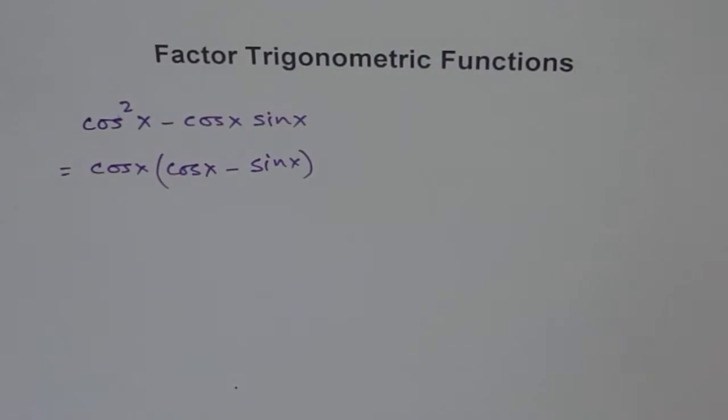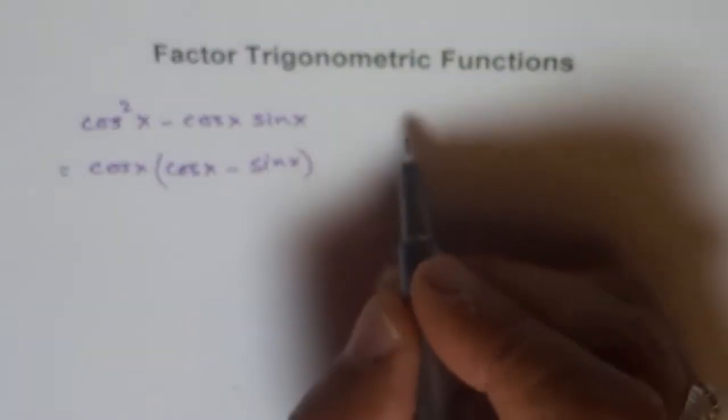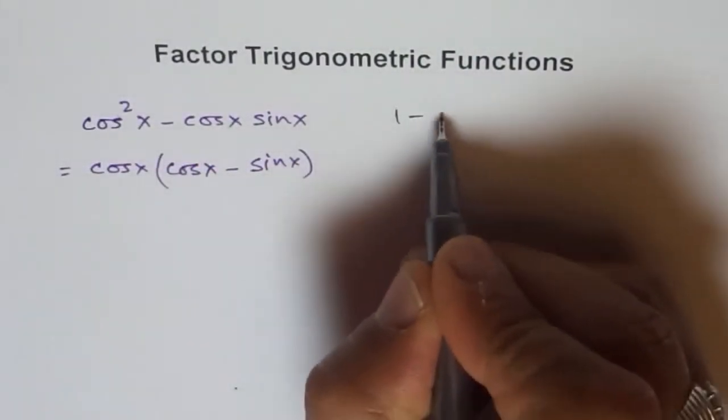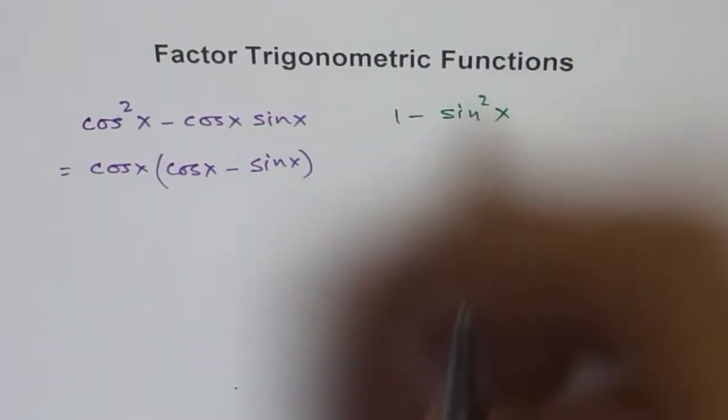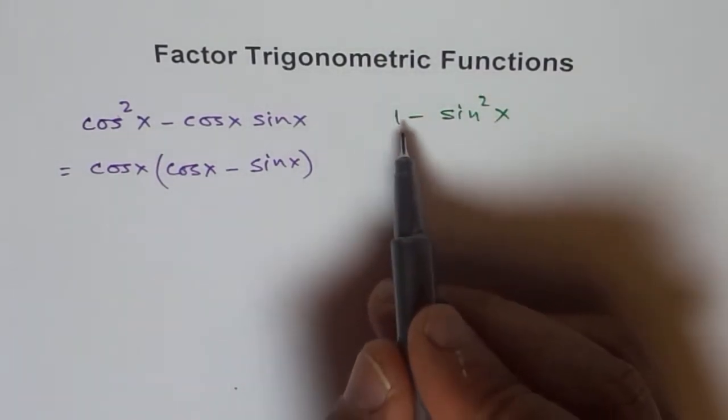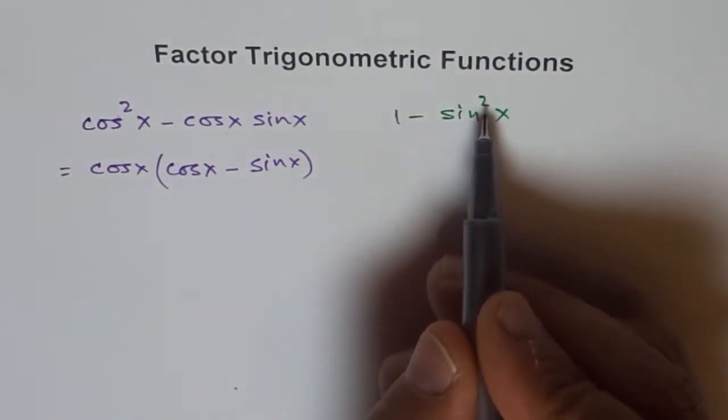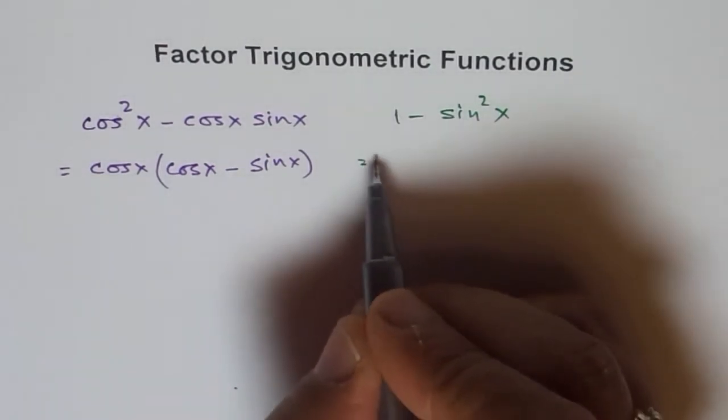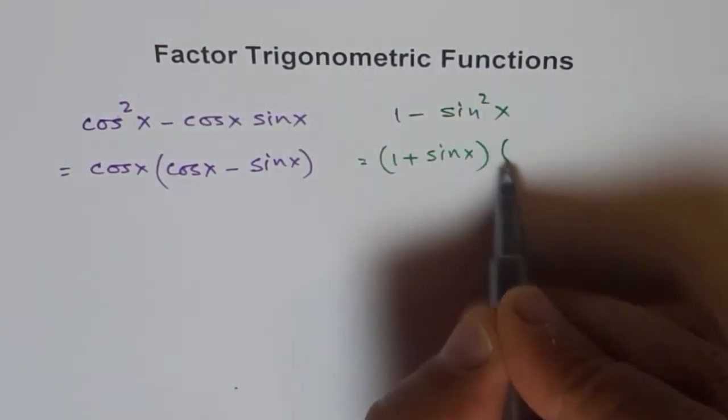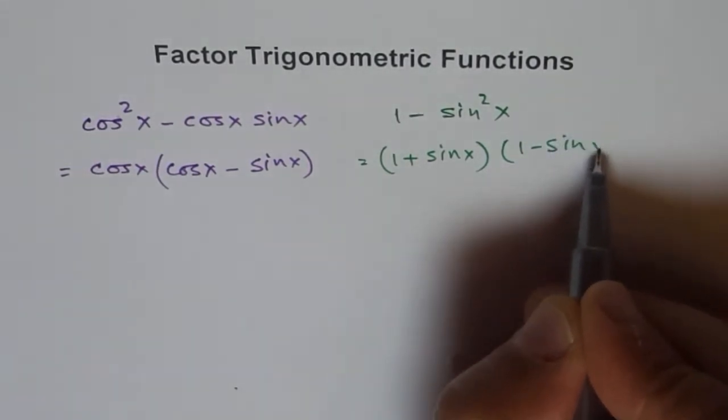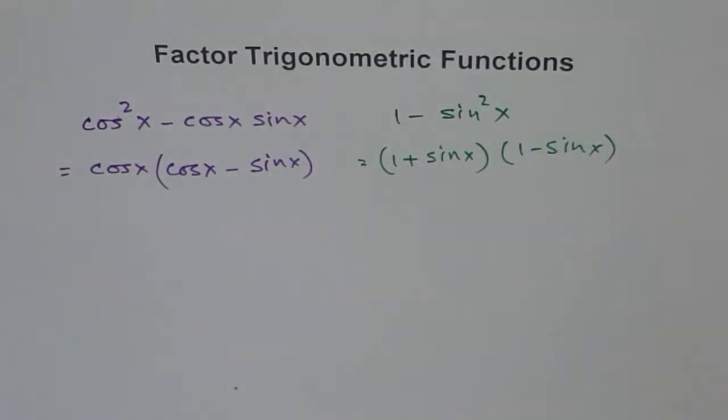Now I can give you some more examples which are very common here, like 1 - sin²x. Now this is a kind of difference of squares. Think of it as 1² - sin²x. So this can be factored as (1 + sinx)(1 - sinx). That is the factoring for such kinds of functions.